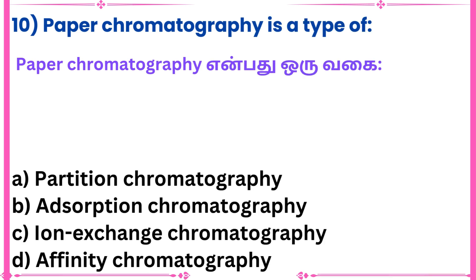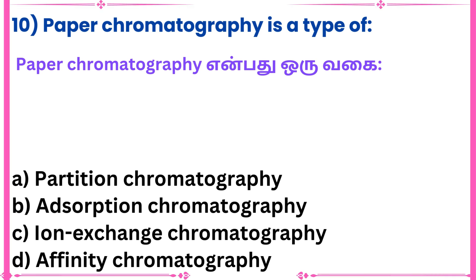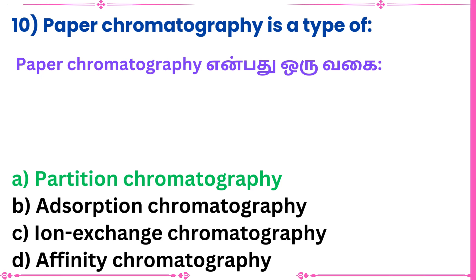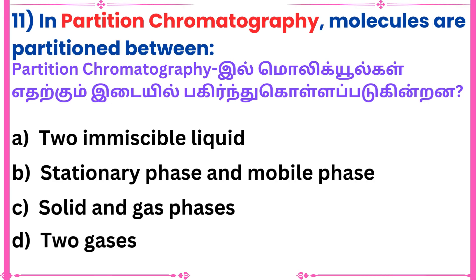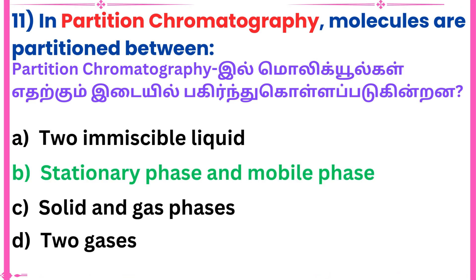Tenth question: Paper chromatography is a type of — Answer: Partition chromatography. Eleventh question: In partition chromatography, molecules are partitioned between — Answer: Stationary phase and mobile phase.